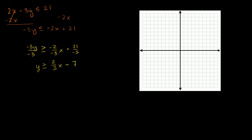Let's graph it in orange. The y-intercept is negative 7, and the slope is positive 2/3. So when you run 3, you go up 2 — repeating in both directions. The line will look something like this.